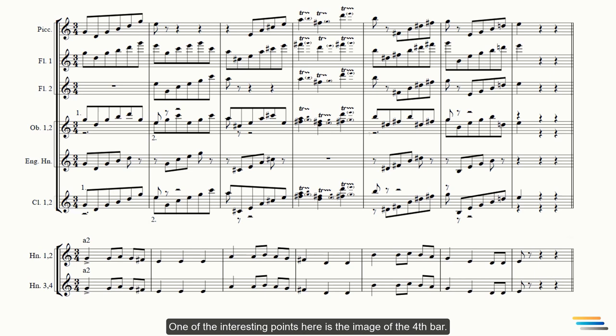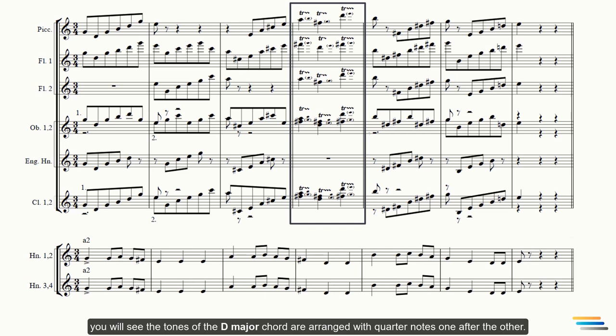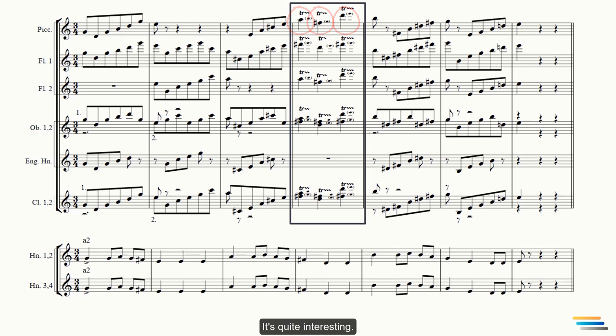One of the interesting points here is the image of the fourth bar. Although it looks different, it is designed using the stretch method. If you look closely, you will see the tones of the D-major chord are arranged with quarter notes, one after the other. The same function was used in other instruments. It's quite interesting. Tremolo was used to add some kind of color.